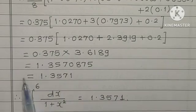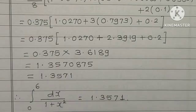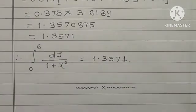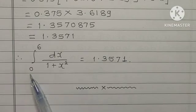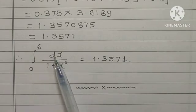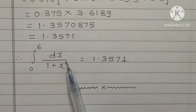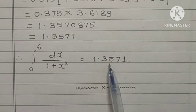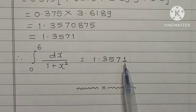This is the value of that integral. So in this way, integration 0 to 6, dx upon 1 plus x square is equal to 1.3571.